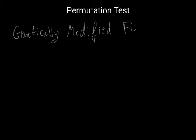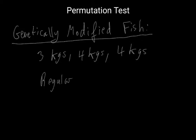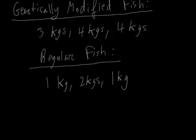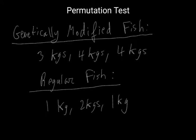In this video we'll be discussing the permutation test. Suppose we had two groups of fish: genetically modified fish, and let's say there were three of them that weigh 3 kilograms, 4 kilograms, and 4 kilograms. And let's say we had regular fish that weigh 1 kilogram, 2 kilograms, and 1 kilogram. So our question is: is there a difference in the average weight between these two groups of fish? How would we confirm or test this using a permutation test?